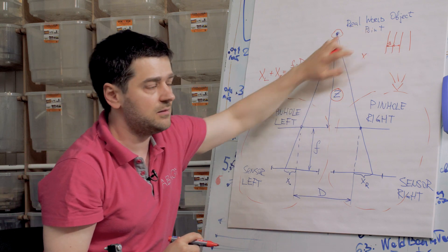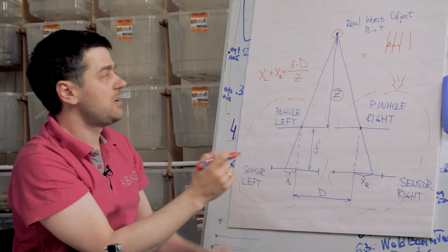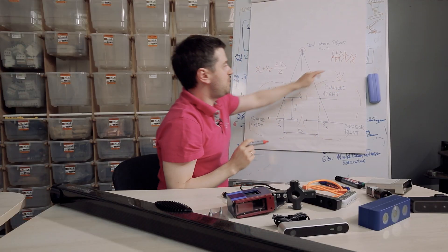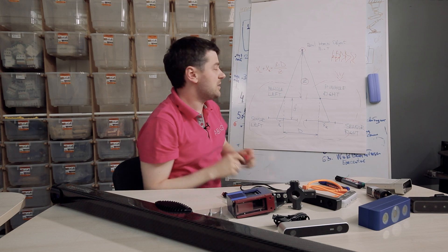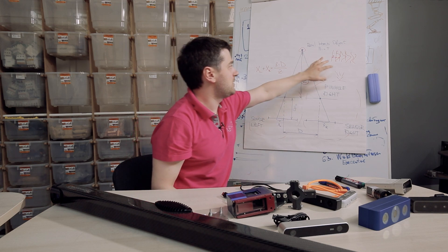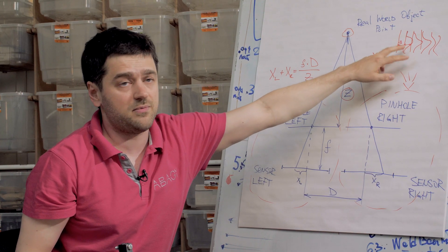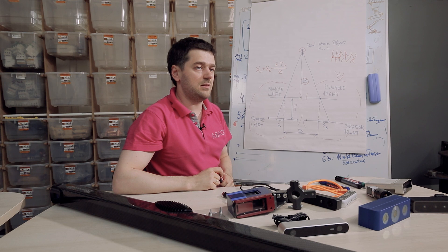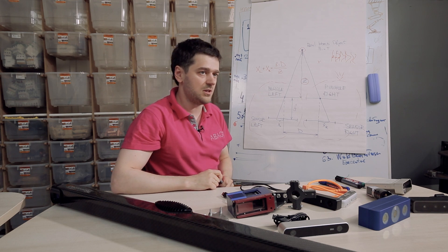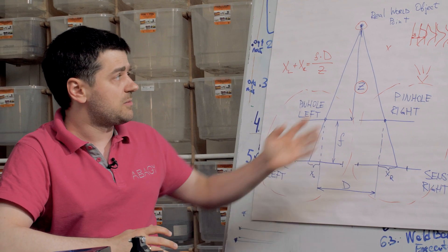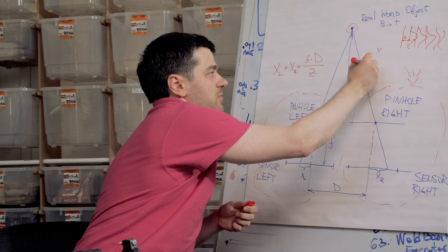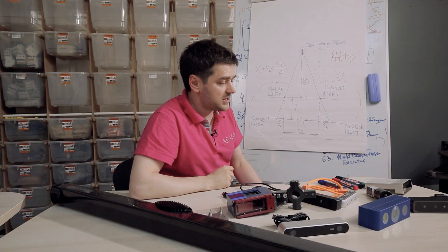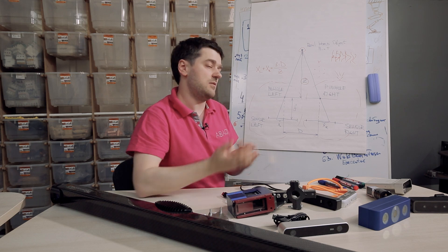Now imagine we don't have a flat plane but some kind of object — the lines would deform accordingly. By analyzing this deformation of the pattern, we can get the depth for every point of the image. The projector can project different kinds of patterns: sometimes lines, sometimes fringes, sometimes dots — it all depends on the vendor. It can also be in infrared or in visible light, depending on the application.